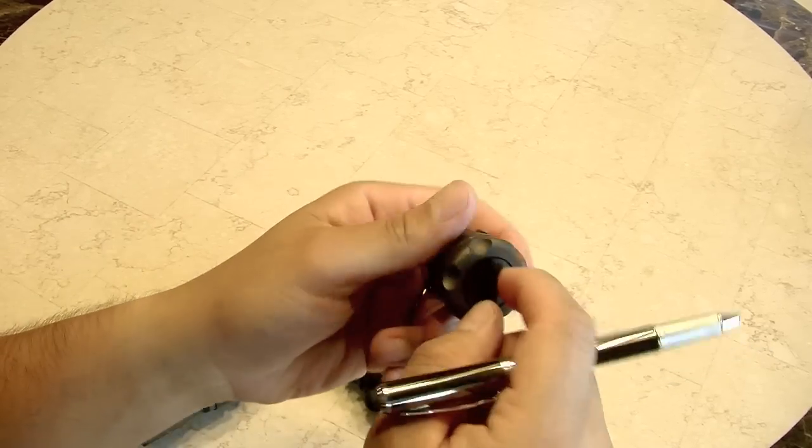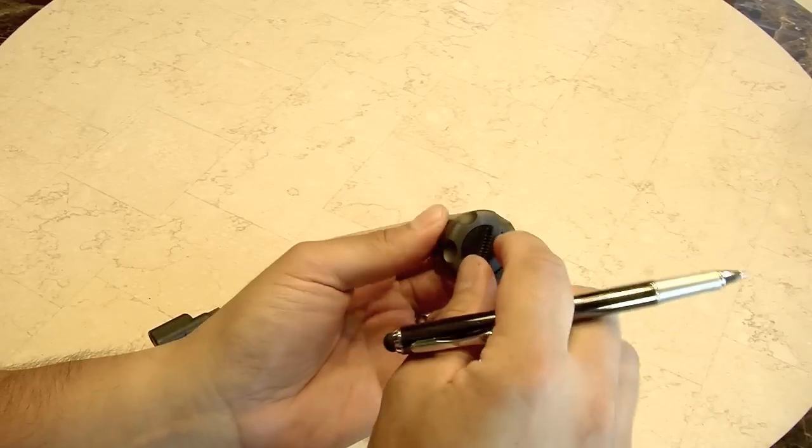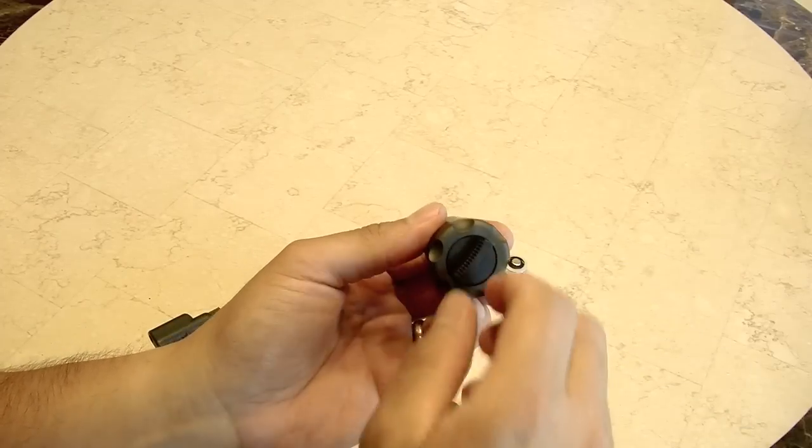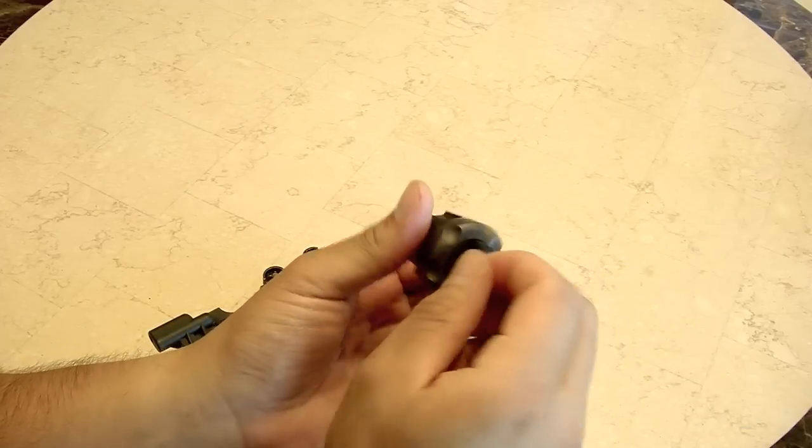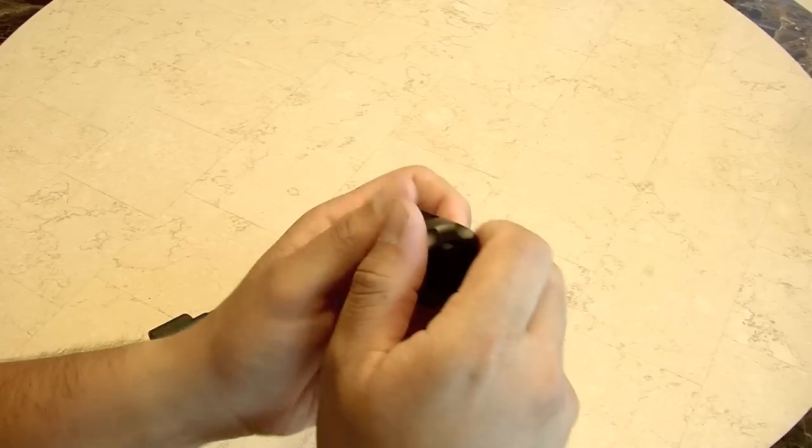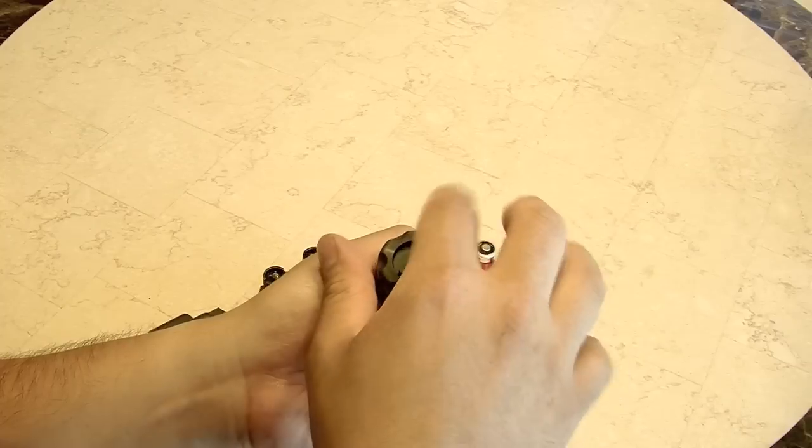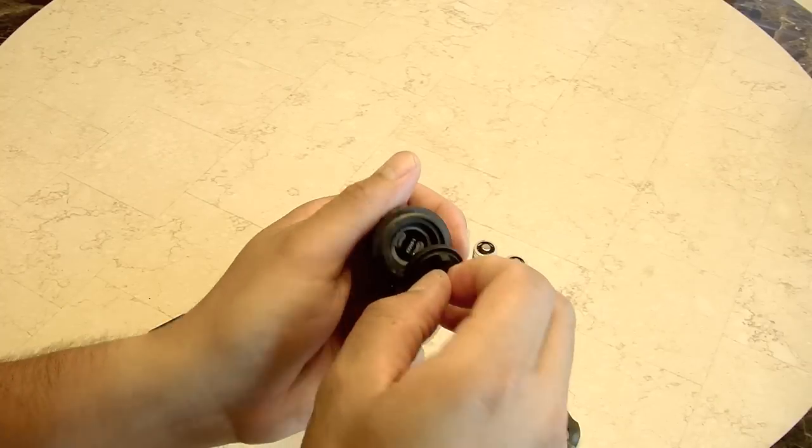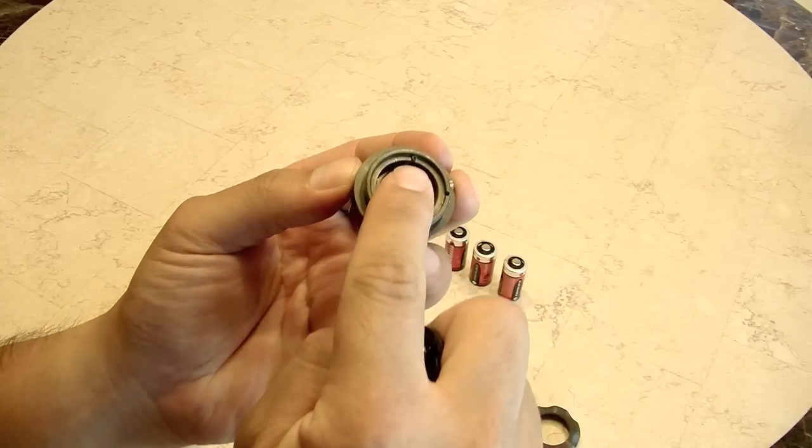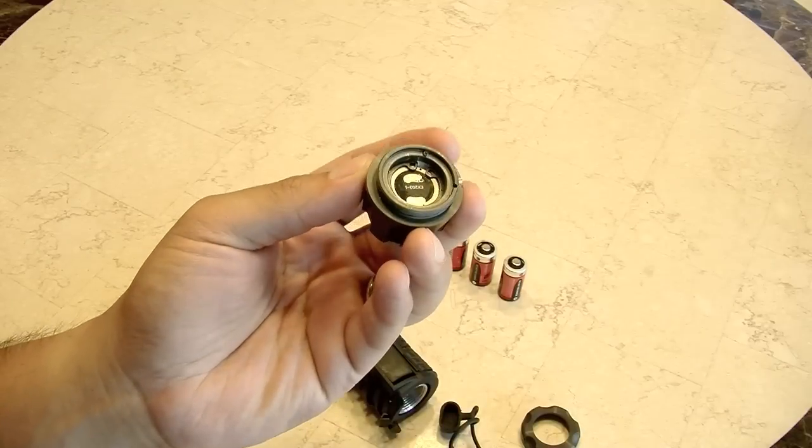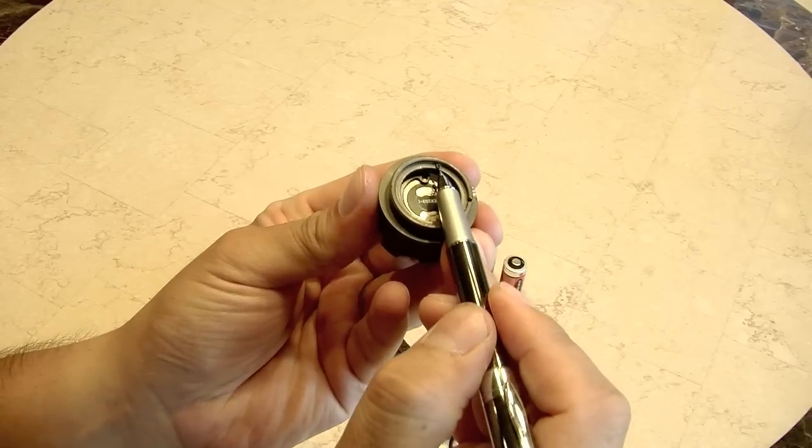The on-off switch, not as nice as the one on the Surefire. The Surefire one has a positive click one way or the other. This one just kind of floats freely. Kind of cheap here. You take this little ring off. What stops it is this little screw. I don't know if you can see that or not. There's a tiny screw in here.